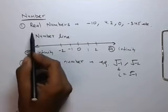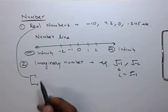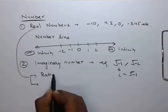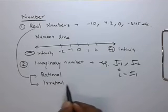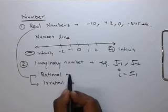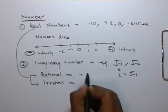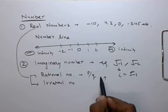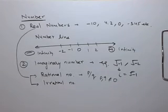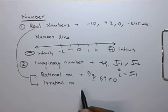The real numbers now can be classified into two types of numbers. One is rational number, other is irrational number. Rational numbers are the numbers which can be written in p by q form, where p and q are not equals to 0. And other numbers which cannot be written in p by q form are called the irrational numbers.